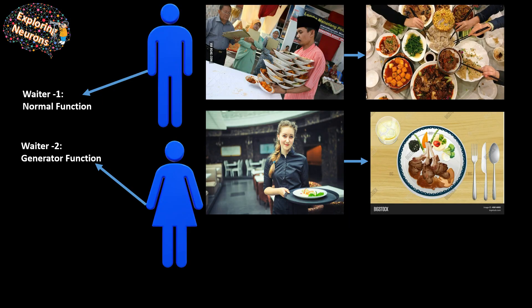The first waiter who gets everything all at once — occupying all the space — represents your normal Python function, where you pass something to the function and it returns everything at once. Waiter B represents a generator function, because you pass the input but instead of giving you everything all at once, she gives it to you in sequence, one by one as you request. This is a much cleaner way — it won't occupy much space in your memory.